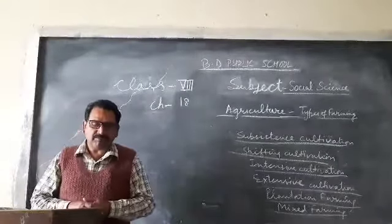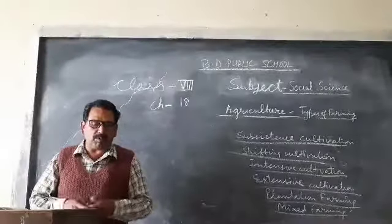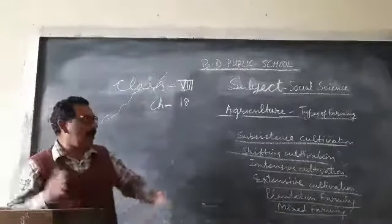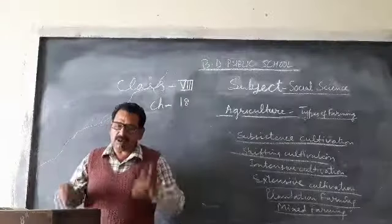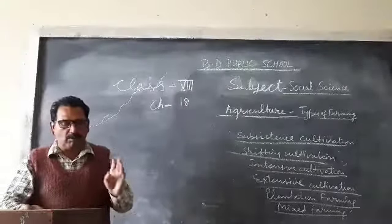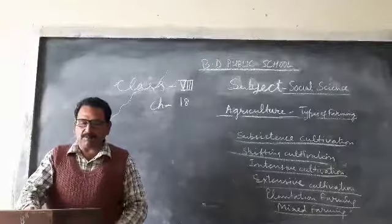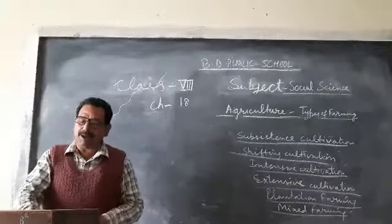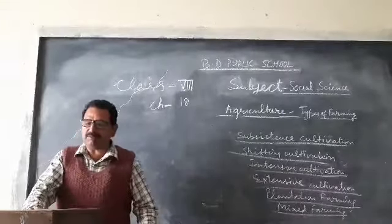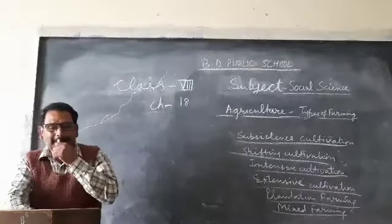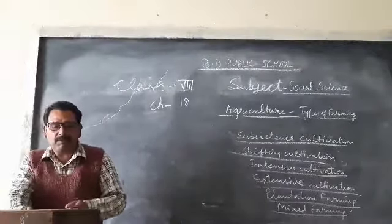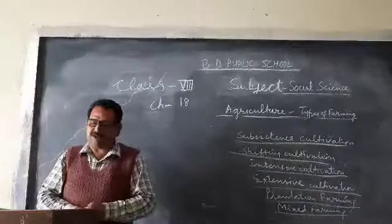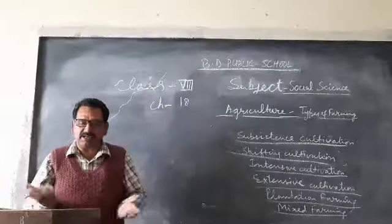Extensive cultivation. Extensive cultivation is a type of commercial agriculture in which crops are grown on very large farms. Large quantities of crops are produced using machinery and scientific methods. Wheat cultivation and cattle ranching as forms of extensive cultivation can be seen in the prairies of USA, Canada, Australia, and Argentina.